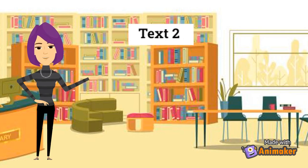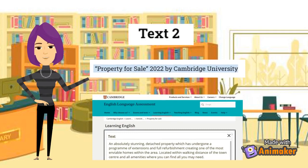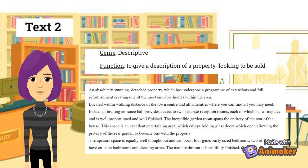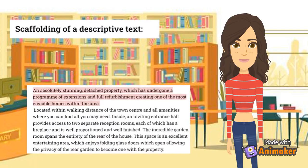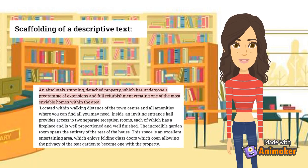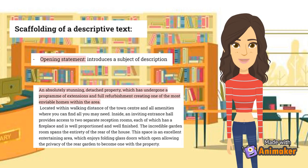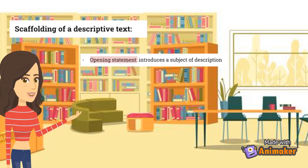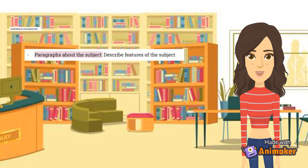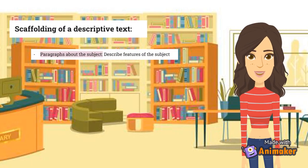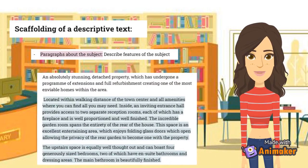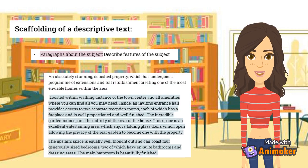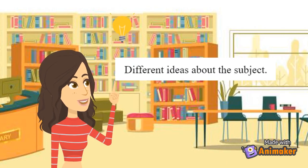The second text to analyze is called "Property for Sale," and it was published in 2022 by Cambridge University. First of all, the genre of this text is descriptive, and its function is to give a description of a certain property that is looking to be sold. Concerning the descriptive scaffolding of this text, it is composed of an opening statement that introduces the subject of description. The element described is a property, introduced in the first paragraph. The subsequent paragraphs each describe one feature of the subject — where the property is located, how it looks inside, the garden, and other spaces. Most sentences present different ideas about the subject.